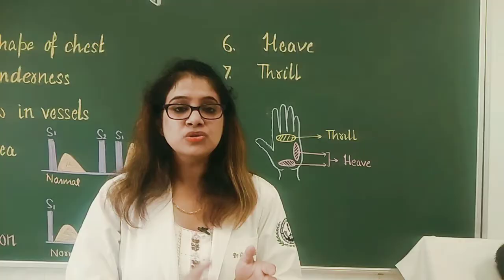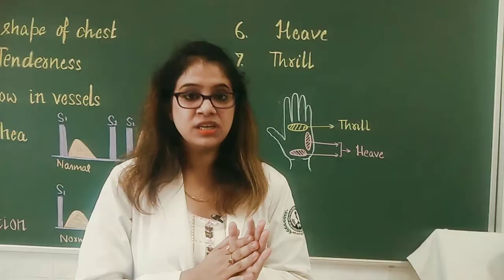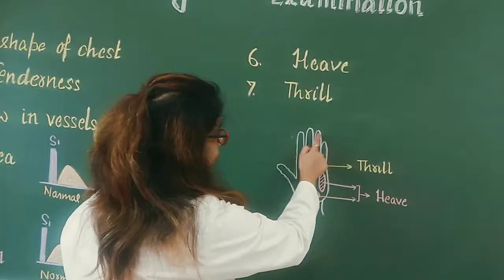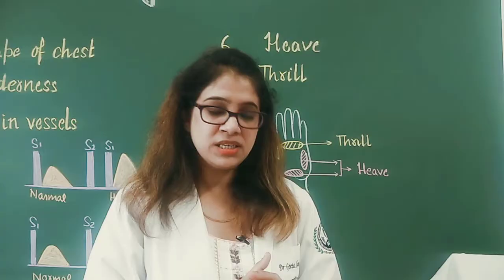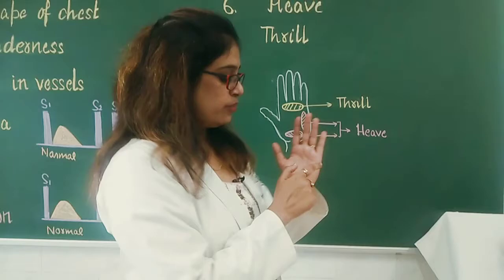To palpate for the thrill, we use either the pulp of the fingers or the base of the fingers. We have to palpate the whole precordial area, especially the four areas, using the flat of the hand — particularly with the base of the fingers.